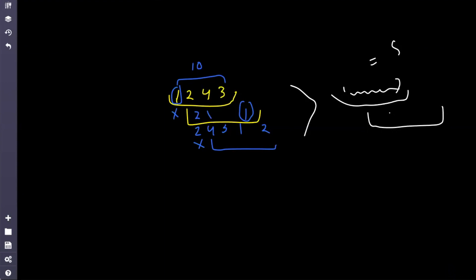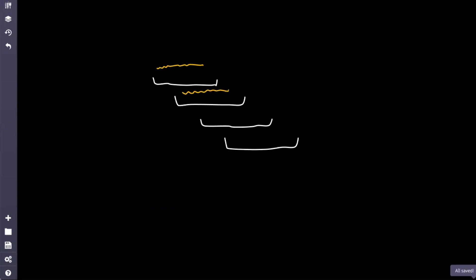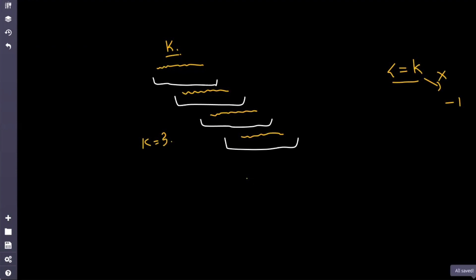Since all subarrays share the same element multiset, we can conclude that at most k unique elements can exist in the array. If there are more than k unique elements, it's impossible to arrange them so every subarray has equal sum — so in that case the answer is -1. For example, if k=3 and you have four distinct values, you can't fit four different values into every window of size 3.